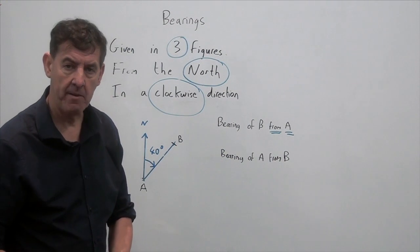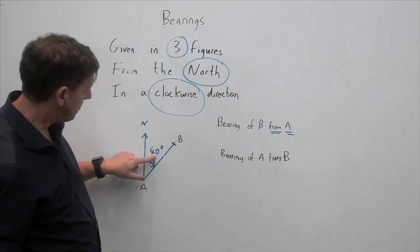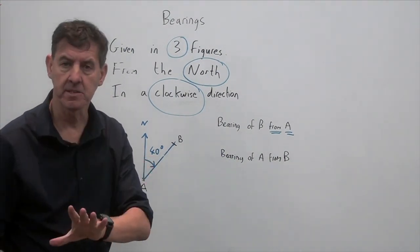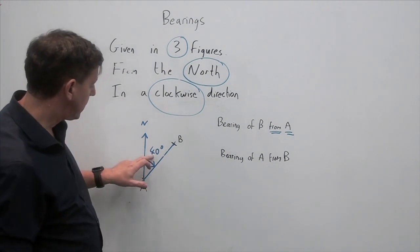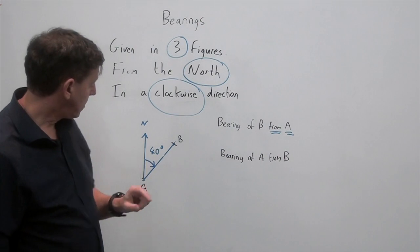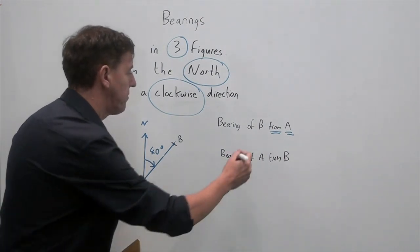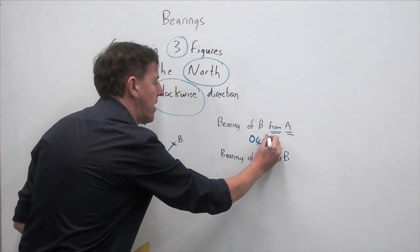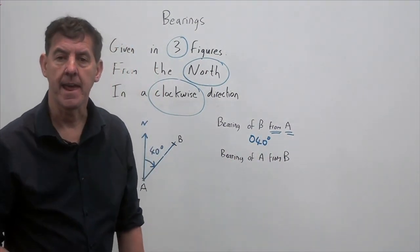How do I write the bearing? Well, if this angle was three figures already, I wouldn't have to add anything to it. But because it's only a two-figure number, I have to place a third digit. So I just place a zero in front of that 40. And I have worked out the bearing of B from A.